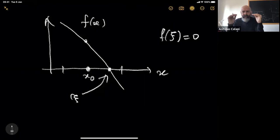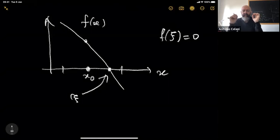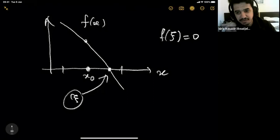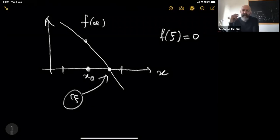So, how would you solve that problem? Since I want you to wake up early today, I'm going to ask: can you come up with simple algorithms that solve this problem — how to find this zero, given that you can query the value of the function at any point? One suggestion is the dichotomy algorithm: you take two points, ask for the value of the function, and if it's positive on one side and negative on the other, you reduce your interval and so on.